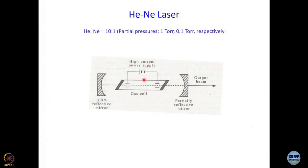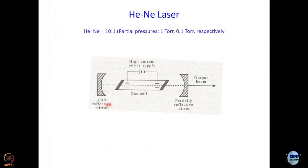In a HeNe laser, you have a tube. We know by now that in a laser you have an active medium or gain medium and you have two mirrors — that is the simplest way you can build a laser, that is what constitutes a laser cavity. As usual, you have one mirror which is a high reflector mirror where the reflectance is 100%, and you have another mirror which is a partially reflective mirror called the output coupler.